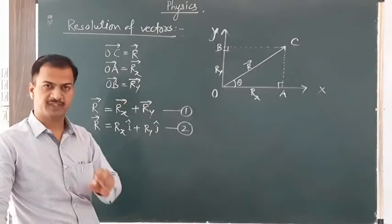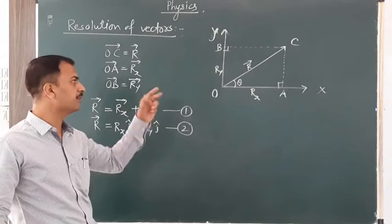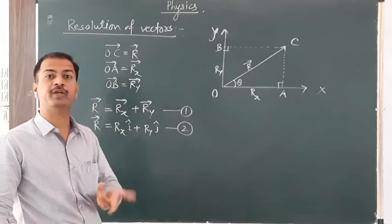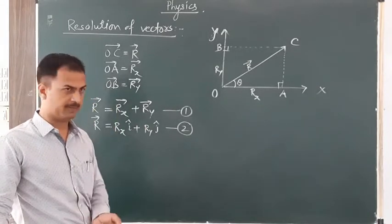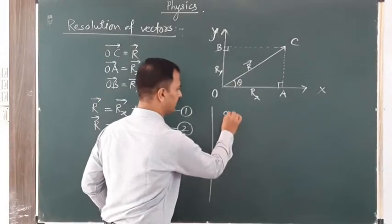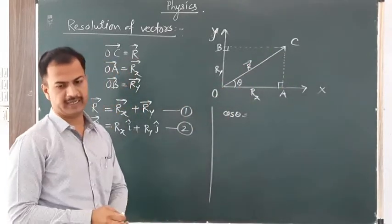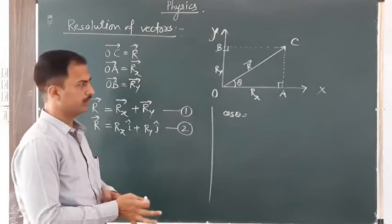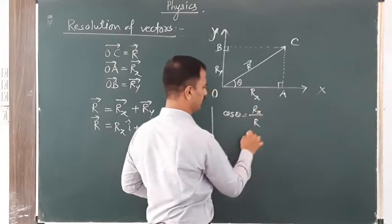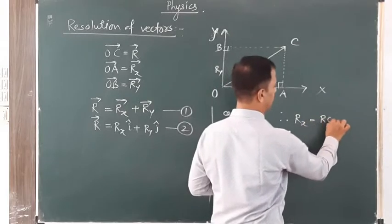Now, if you split R into components, how is the vector split? R-X is neither R-Y nor just a magnitude on its own. By triangle OAC, cos θ equals R-X upon R. Therefore, R-X equals R·cos θ.